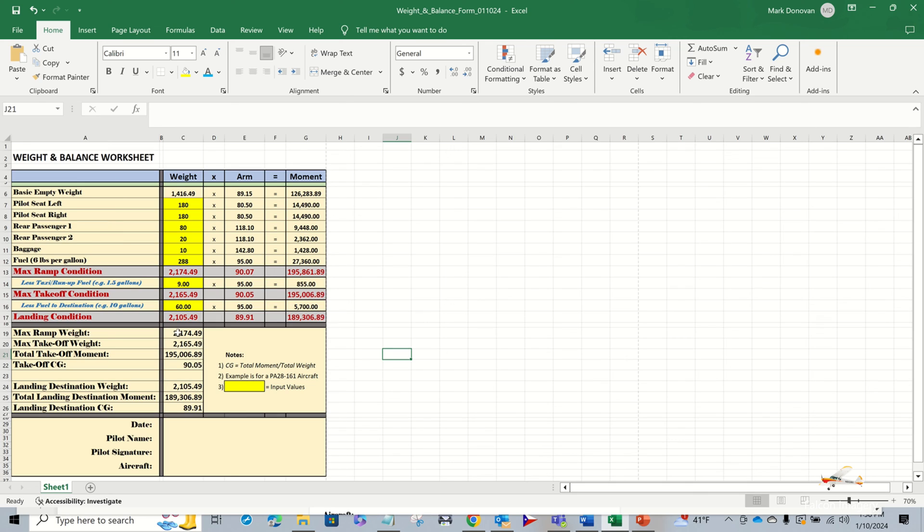To kind of wrap this up, we'll put the max ramp weight summary table here. We're going to put in the max ramp weight of 2,174, the takeoff weight 2,165, the max takeoff moment 195, and our CG 90.5. And then landing, we're going to look at the new weight here. We're going to just place it in here, 2,105, the moment 189,306, and then 89.91. Again, we'll plot the takeoff condition, and we'll plot our landing condition, center gravities, to make sure both taking off and landing that the aircraft's within the CG limits. And then we'll just go ahead and date it, put our name in it, sign it, and we'll specify the aircraft and the registration tail number.